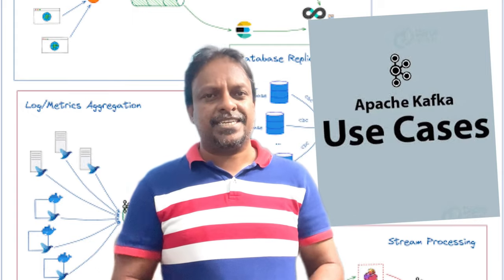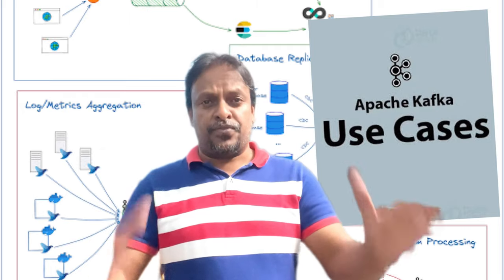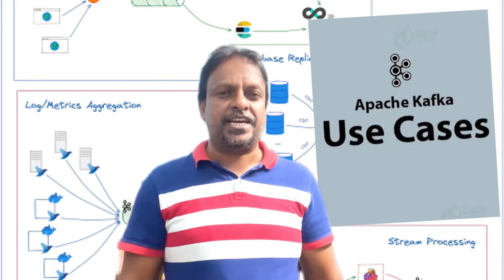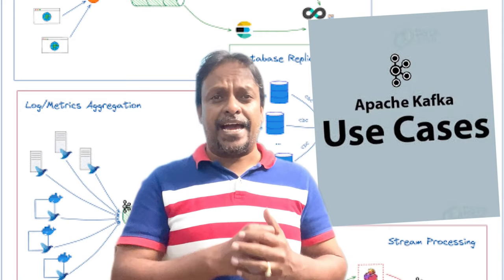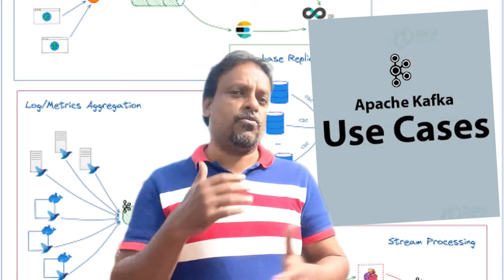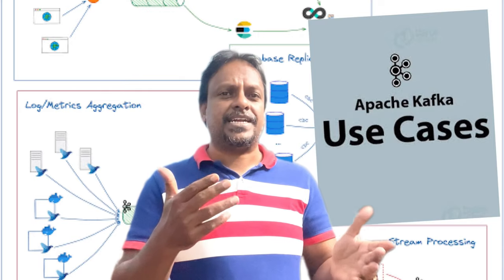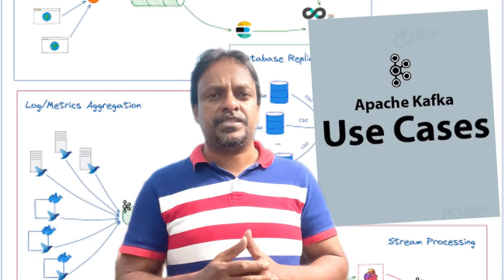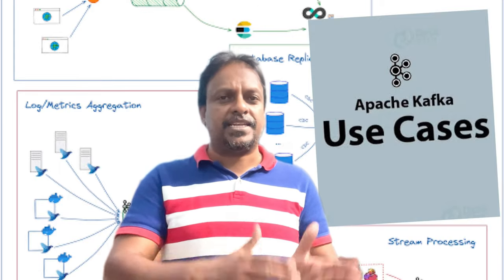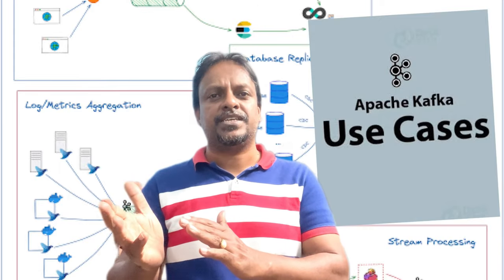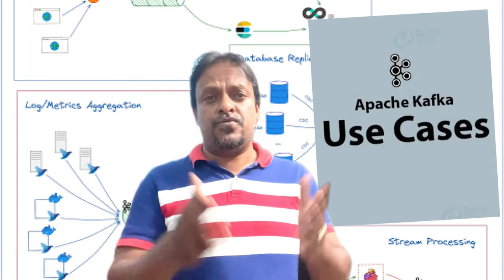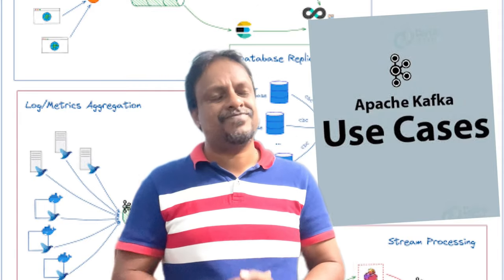The fifth and last use case is data replication. When we have a production database and want to replicate it into different databases — for testing purposes or analysis purposes — we can use Kafka to replicate that data across multiple databases.